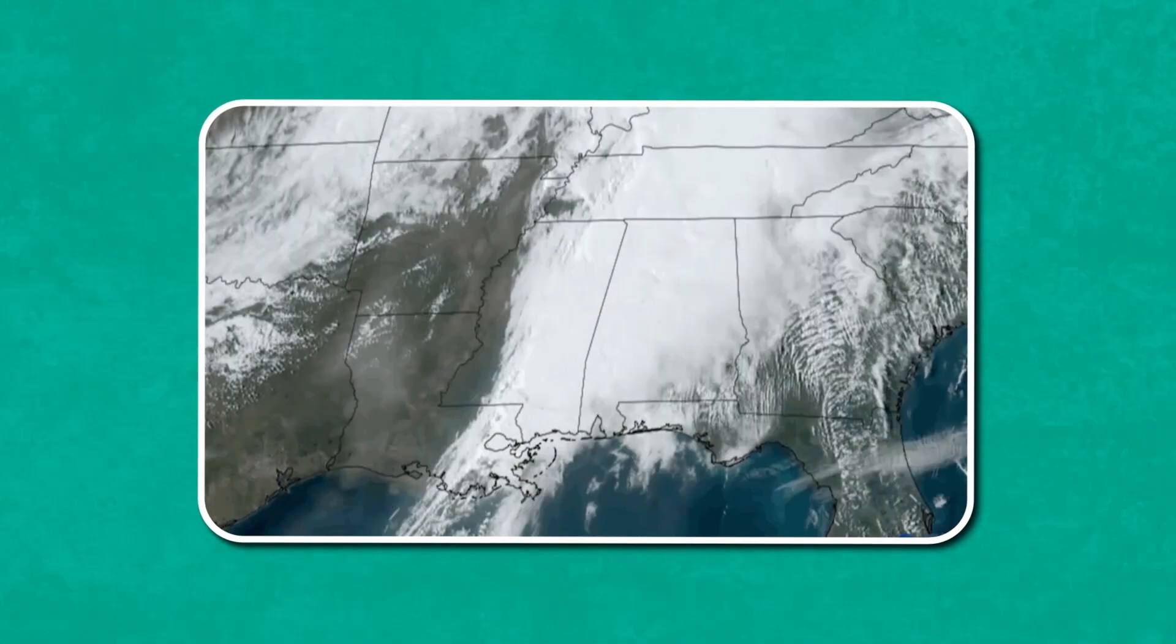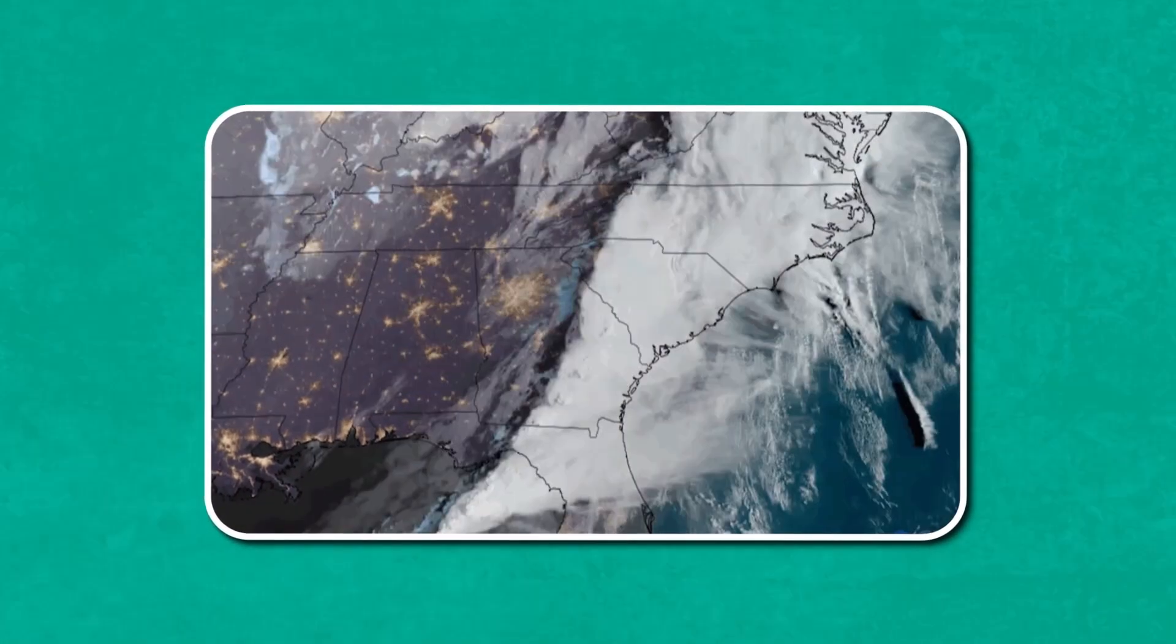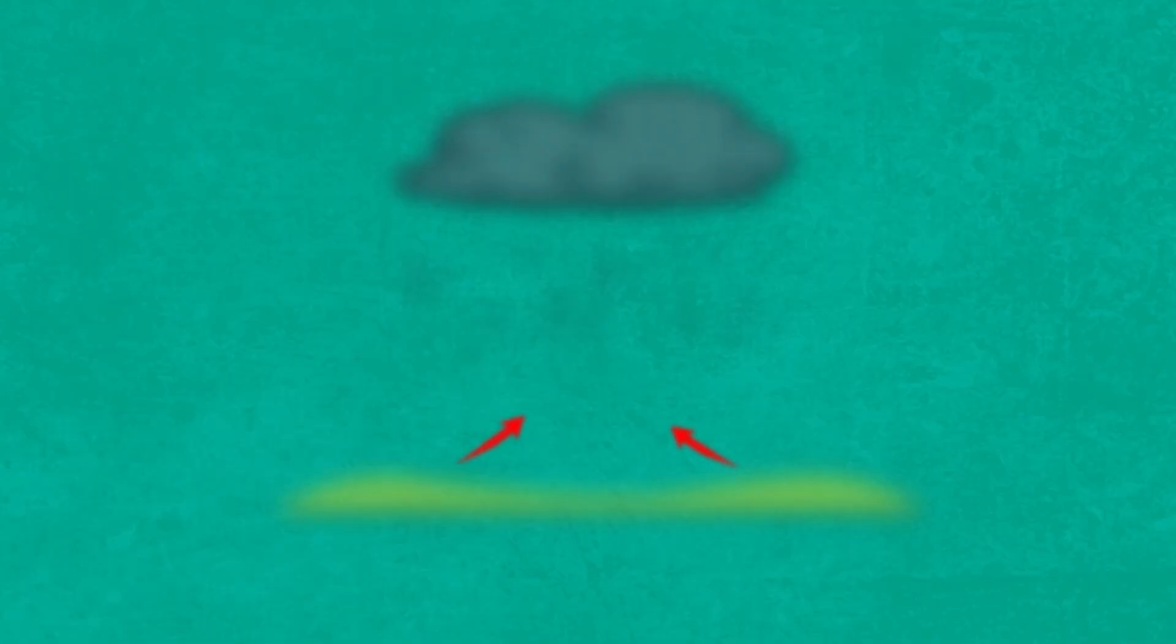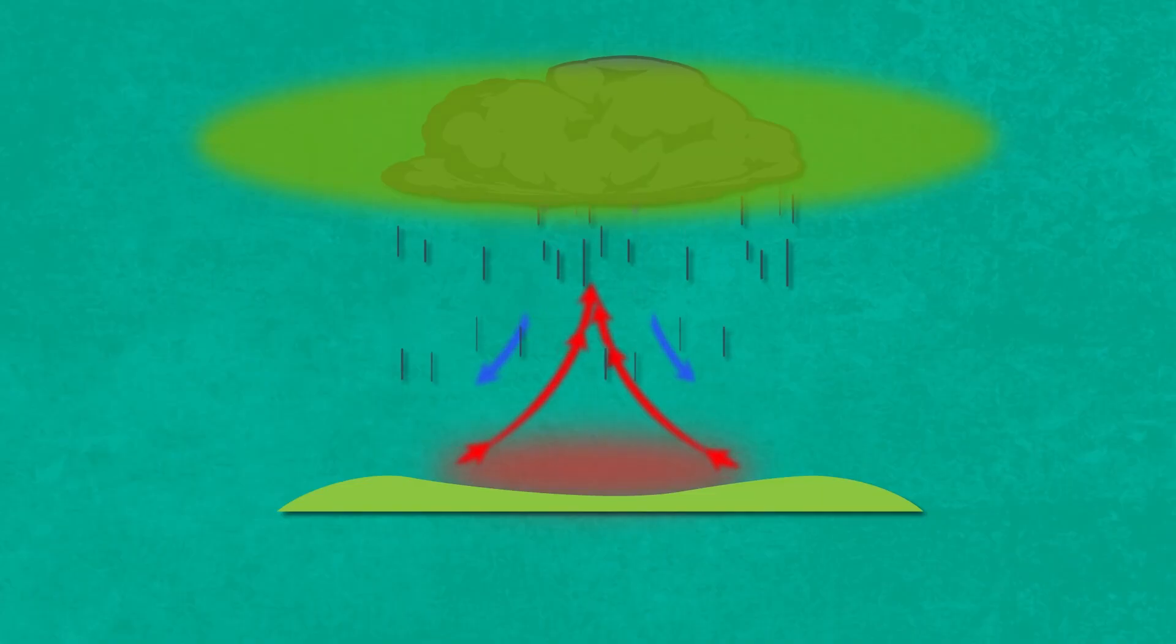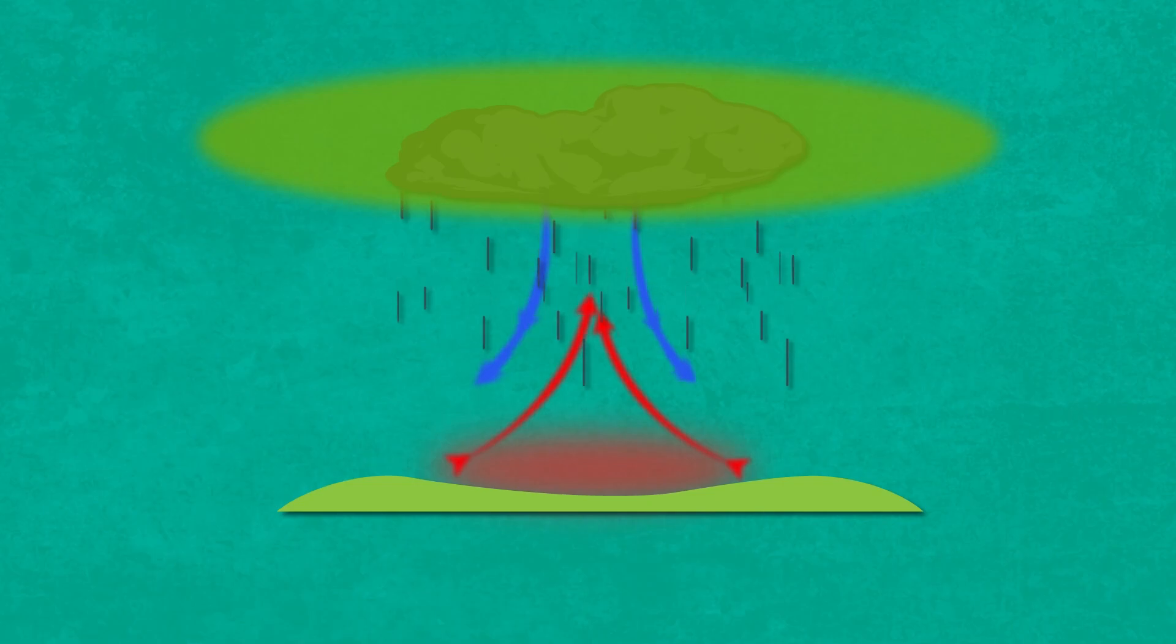Meteorologists are particularly concerned with any thunderstorms exhibiting vortex or spinning type activity. If the updraft and downward rain pressure are particularly strong in some thunderstorms, the light can be scattered, giving the sky a green appearance. While a green sky doesn't always guarantee a tornado, it can certainly be cause for caution.